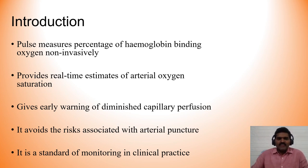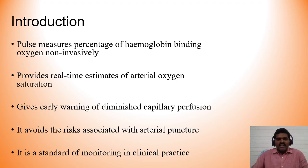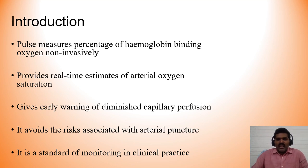Pulse oximetry measures the percentage of hemoglobin binding of oxygen non-invasively — it is easy to obtain and anyone can perform it without medical knowledge. It provides real-time estimates of arterial oxygen saturation, aids continuous patient monitoring throughout the clinical course, and gives early warnings of diminished capillary perfusion. It avoids the risks associated with repeated arterial puncture for blood gas analysis and is now the standard first step in assessing a patient's oxygenation.